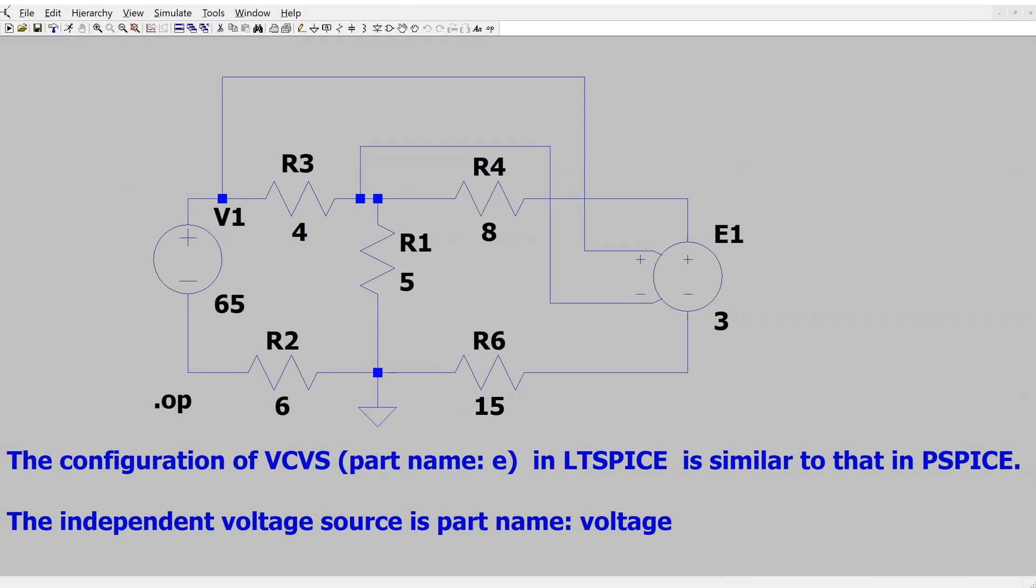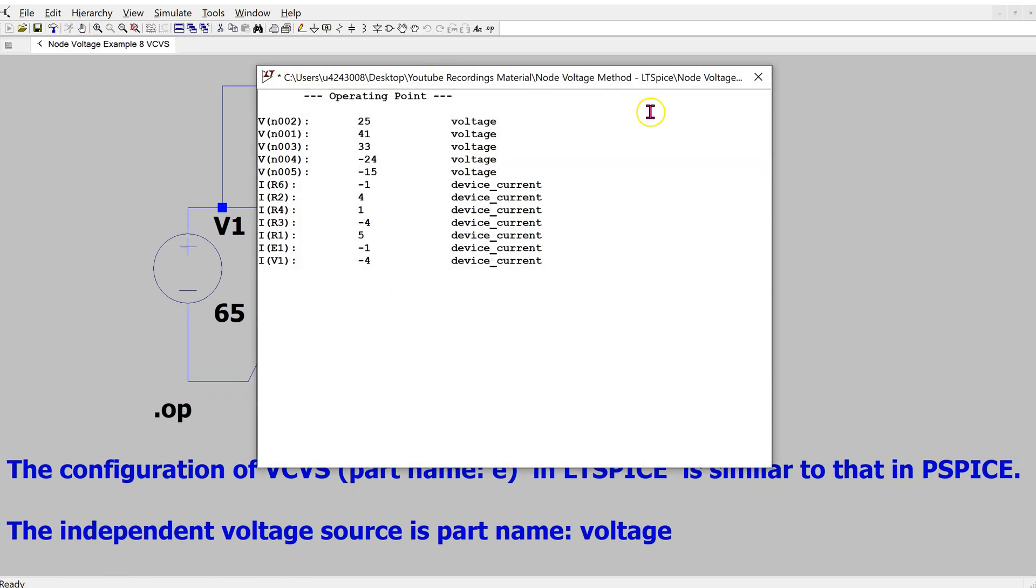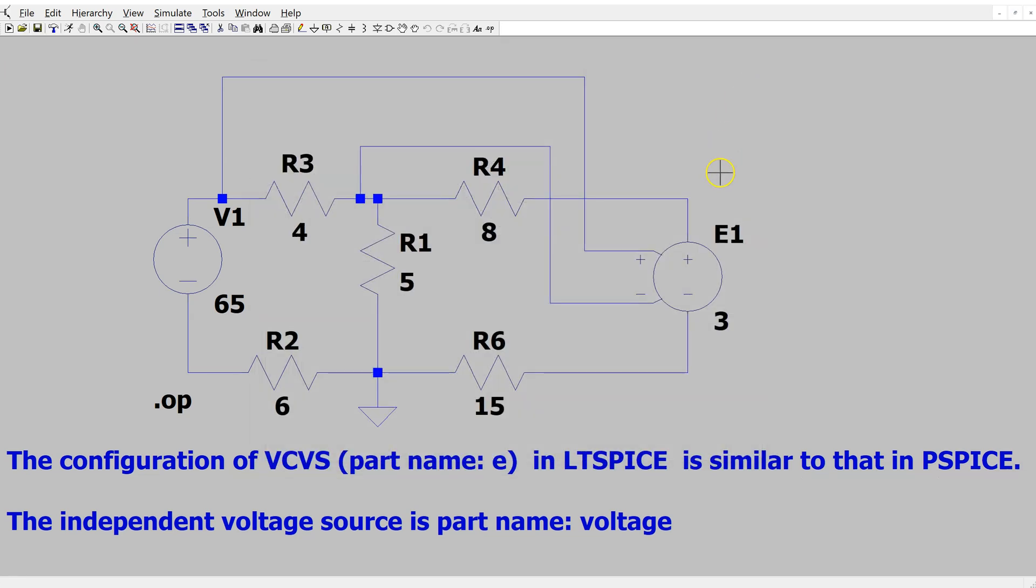We can verify the solution by simulating the circuit in either PSPICE or LTSPICE. The LTSPICE simulation is shown here. The voltage controlled voltage source is available as part name E within LTSPICE and its configuration is pretty straightforward. When we simulate this circuit we get the DC operating point and if I hover the cursor over the voltage controlled voltage source in the bottom left corner LTSPICE confirms that the power dissipated is minus 48 watts and the node voltage is 25 volts.